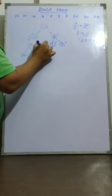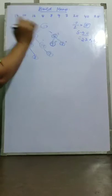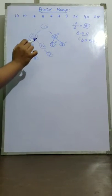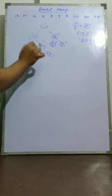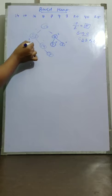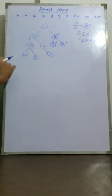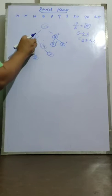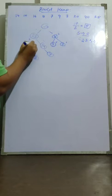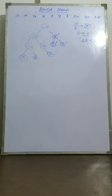After swapping 25 and 14: 40 is greater than 25 and 16; 16 is greater than 9 and 3; 25 is greater than 10 and 14. However, 10 is not greater than 20 and 8, so I swap 20 and 10. Now this is a max heap.